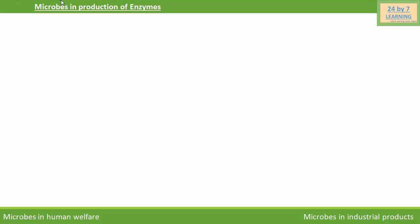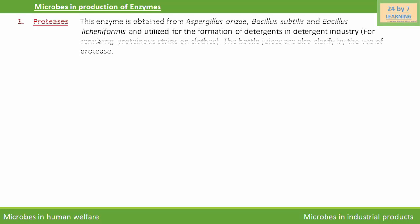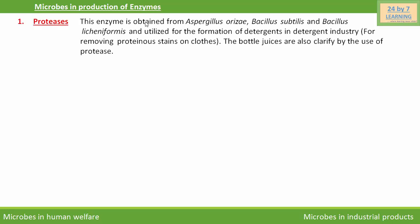Microbes are also useful in the production of enzymes, which are beneficial for different types of industries. The first enzyme we will discuss is protease, which is obtained from Aspergillus oryzae, Bacillus subtilis, and Bacillus licheniformis, and is utilized in the formation of detergents in the detergent industry.